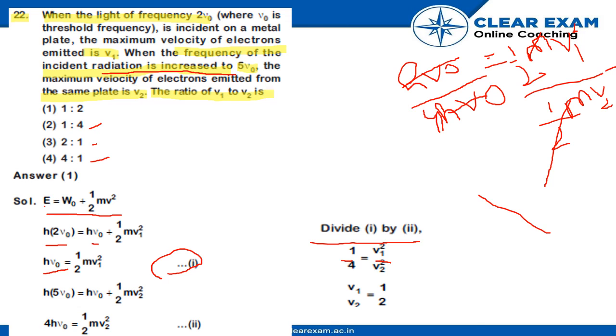So, we can say that 1 upon 4. The root equal to v1 upon v2. So, 1 upon 2 equal to v1 upon v2.